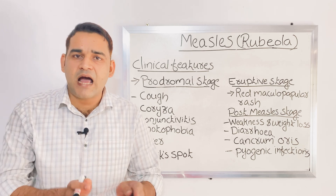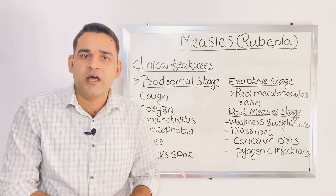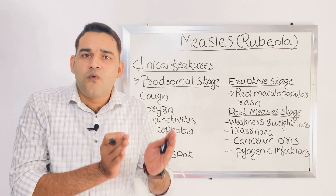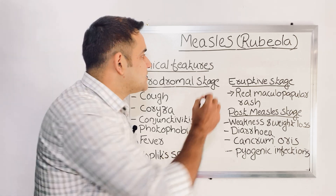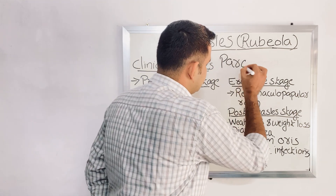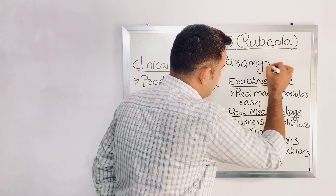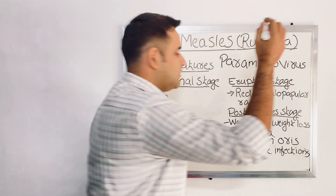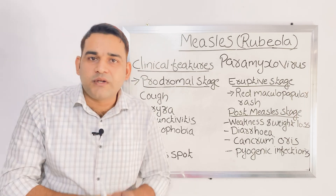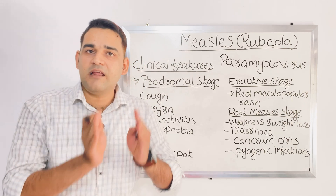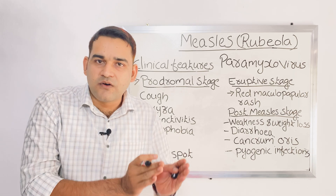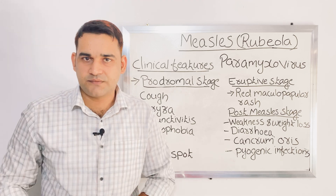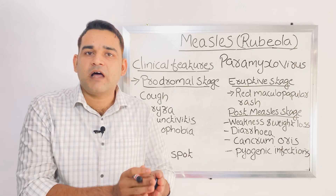The definition of measles is: it is an acute, that is a short-term, highly infectious disease of childhood caused by specific virus of paramyxovirus. That is the definition of the measles.